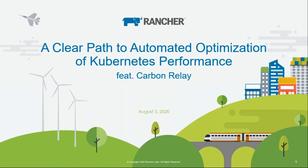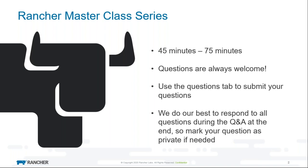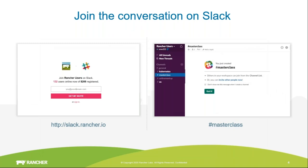Hello, everybody. Thank you for joining our Kubernetes Masterclass this Tuesday, August 4th. Today's topic is Clear Path to Automated Optimization of Kubernetes Performance, which will feature Carbon Relay. If you've attended a masterclass before, you're probably familiar with the format. This class will probably run between 45 and maybe 60 minutes. Please ask questions — we're here to answer any questions you may have on the topic. Use the questions tab on the GoToWebinar panel, and we will do our best to respond to all of them.